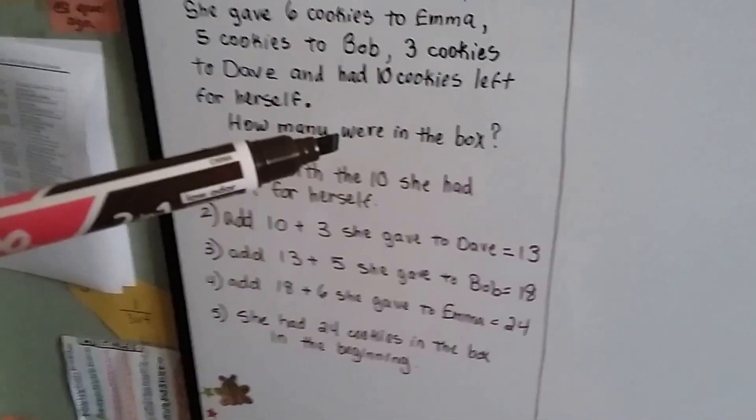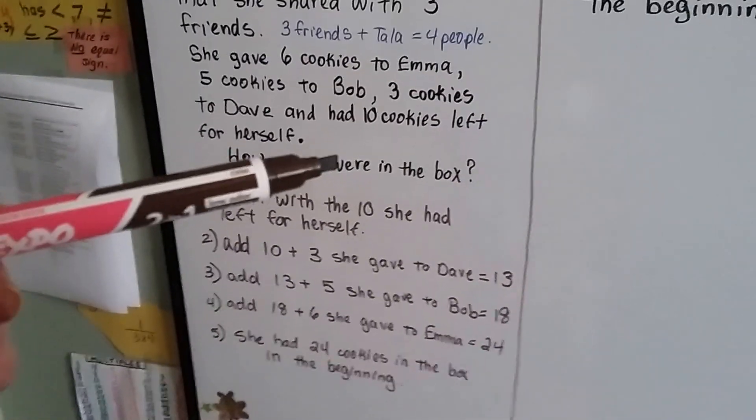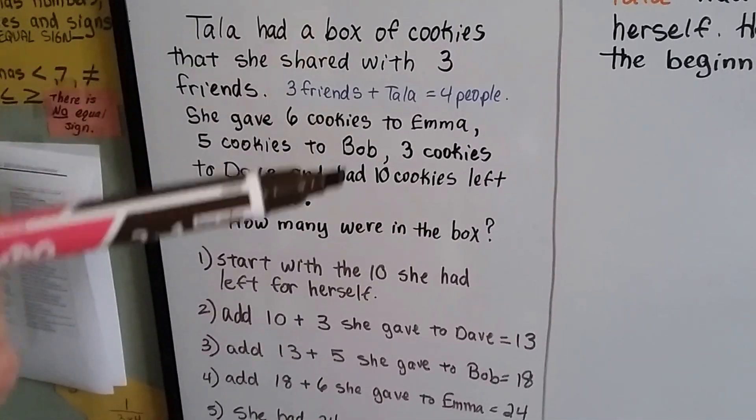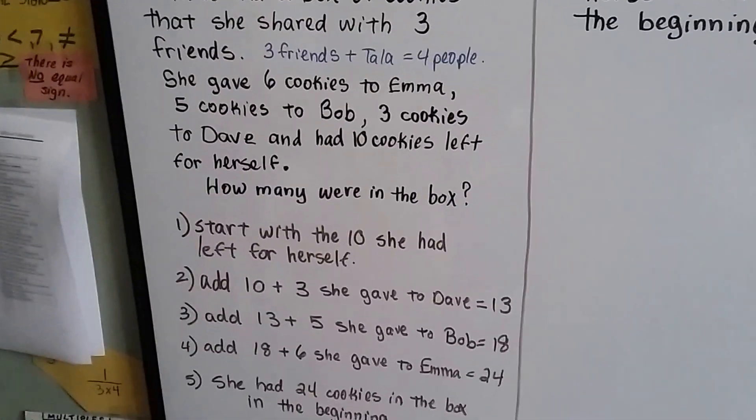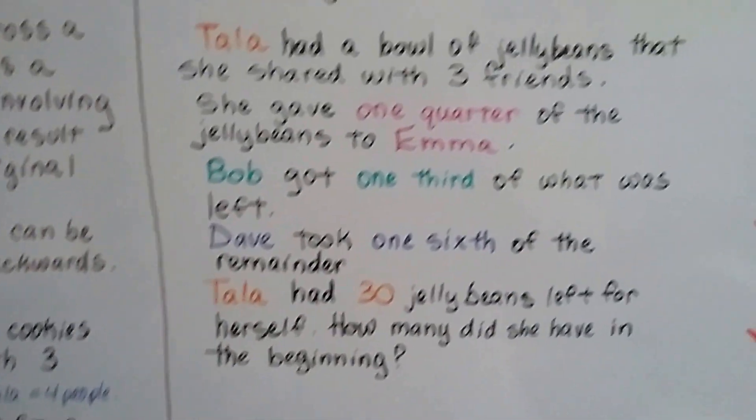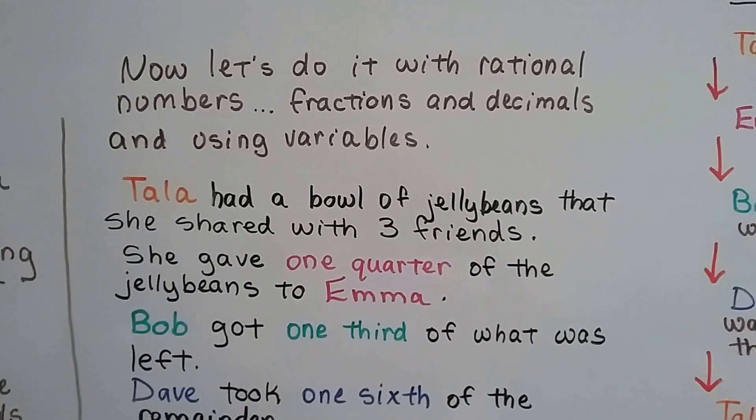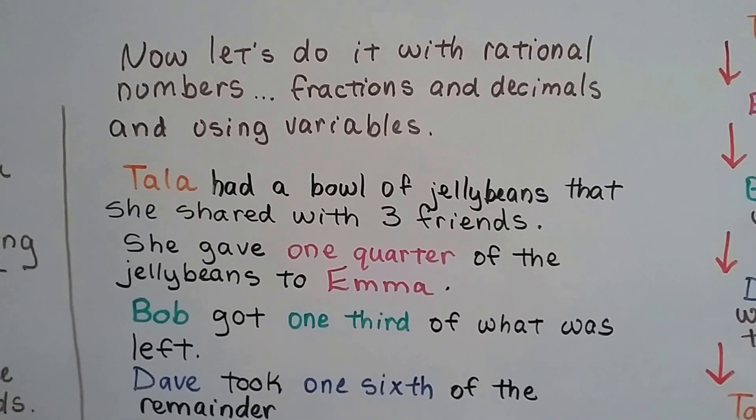So what we did was we started at the bottom of the word problem where we knew she had ten left, and then slowly worked our way back up to find out the total that were in the box. And that's what we're going to be doing. We're going to do it with rational numbers, fractions and decimals, and we're going to use some variables.